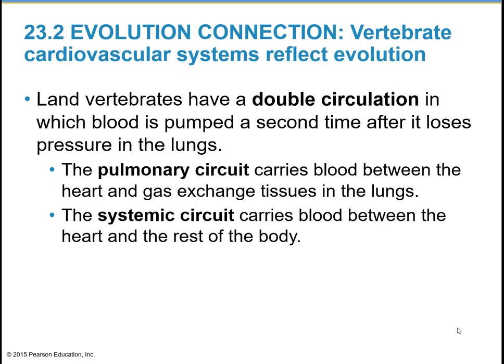Land vertebrates have a double circulation, where blood is pumped a second time after it loses pressure in the lungs. There's a pulmonary circuit, which carries blood between the heart and the gas exchange surface in the lungs — 'pulmonary' means lungs, so this is a pretty short trip close to the heart. The systemic circuit is much longer and carries blood between the heart and the entire rest of the body.